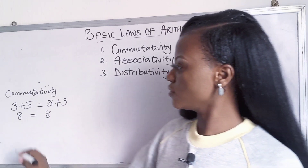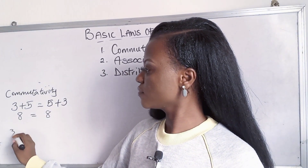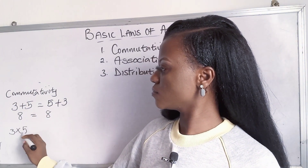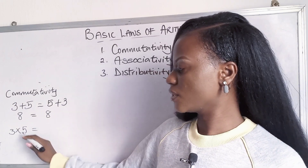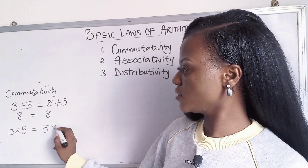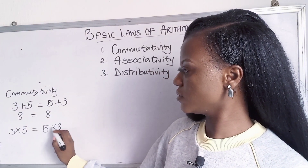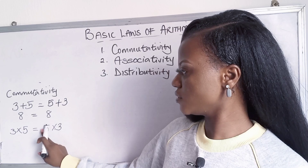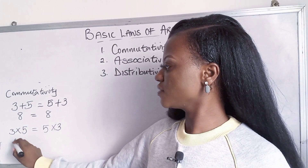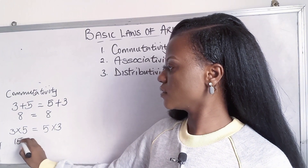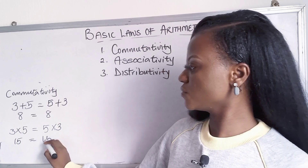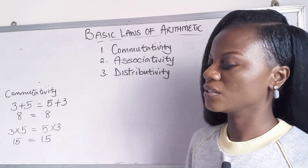Now let's look at multiplication. 3 times 5 can also be reversed to 5 times 3 — it's the same thing. So 3 times 5 is 15, and 5 times 3 is also 15.